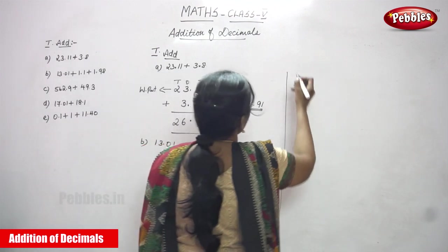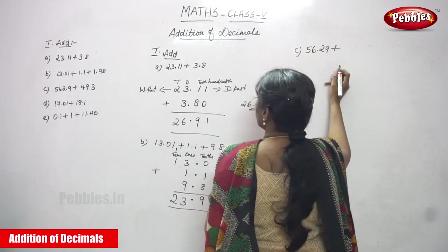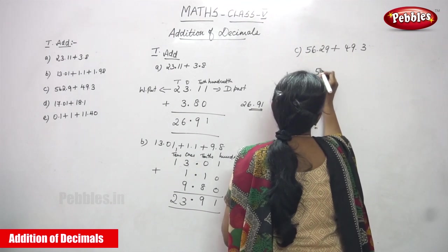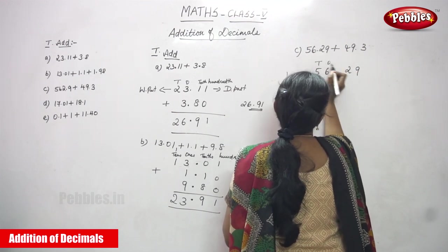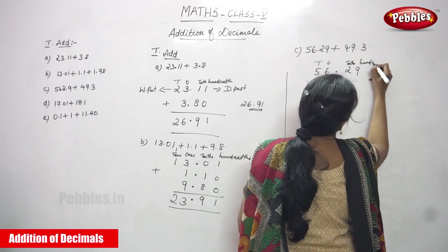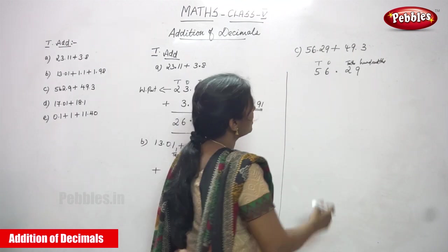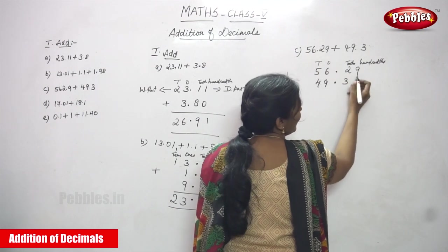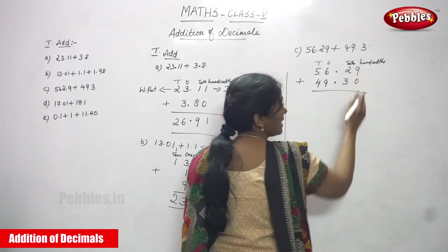Next sum — C sum. That is 56.29 plus 49.3. So the number is 56.29. This is the ones place, this is the tenths place, this is the hundredths place. This is the whole part and this is the decimal part. After that you have to write 49.3. There is no number in the hundredths place, so you have to put 0. After that you have to add again. Start with the decimal part: 9 plus 0 is 9.